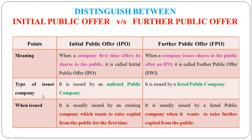There is another type of issuer — an unlisted public company. This is a company that has not yet been listed on the stock exchange. The listing means registering. If a company wants to offer shares in the market, they have to register on the stock exchange.